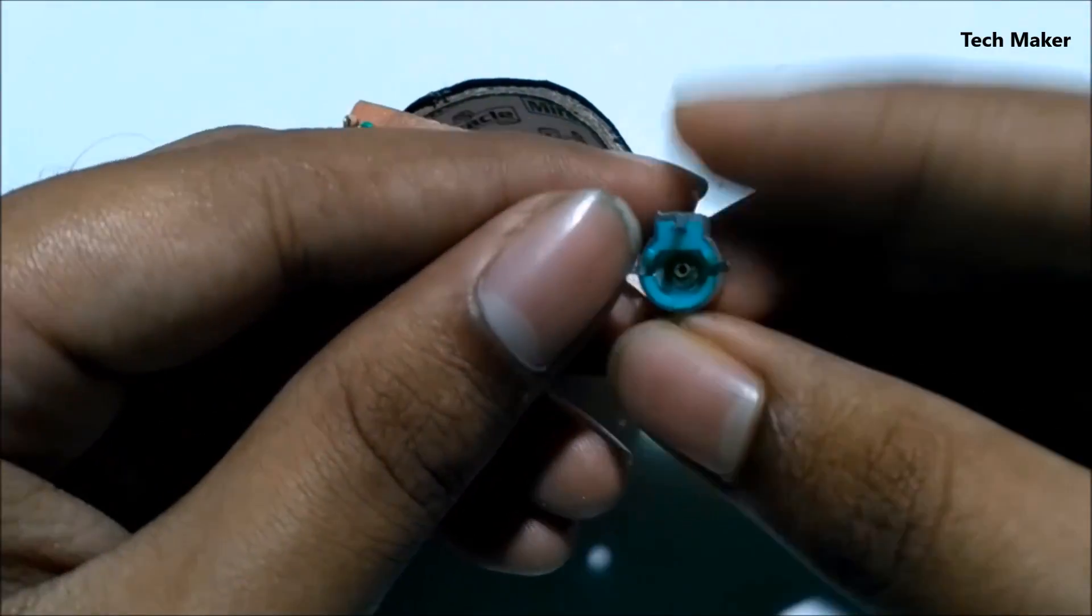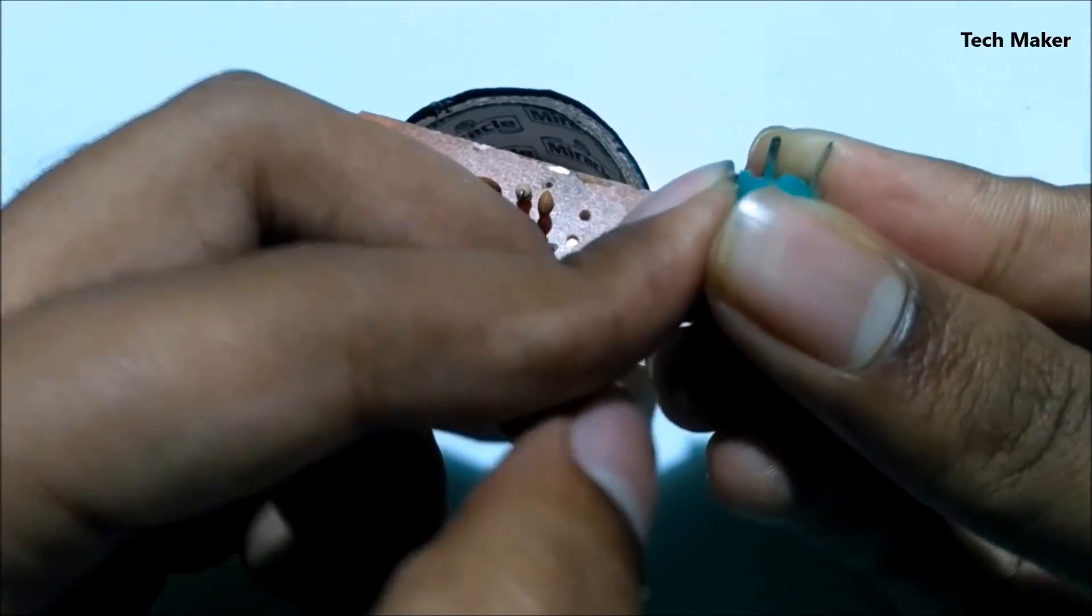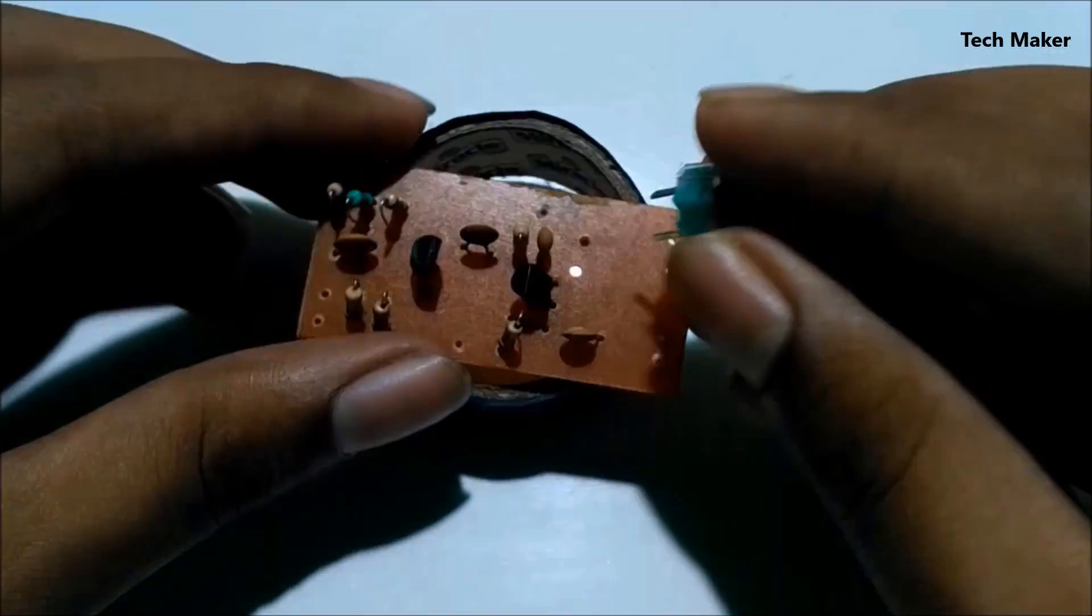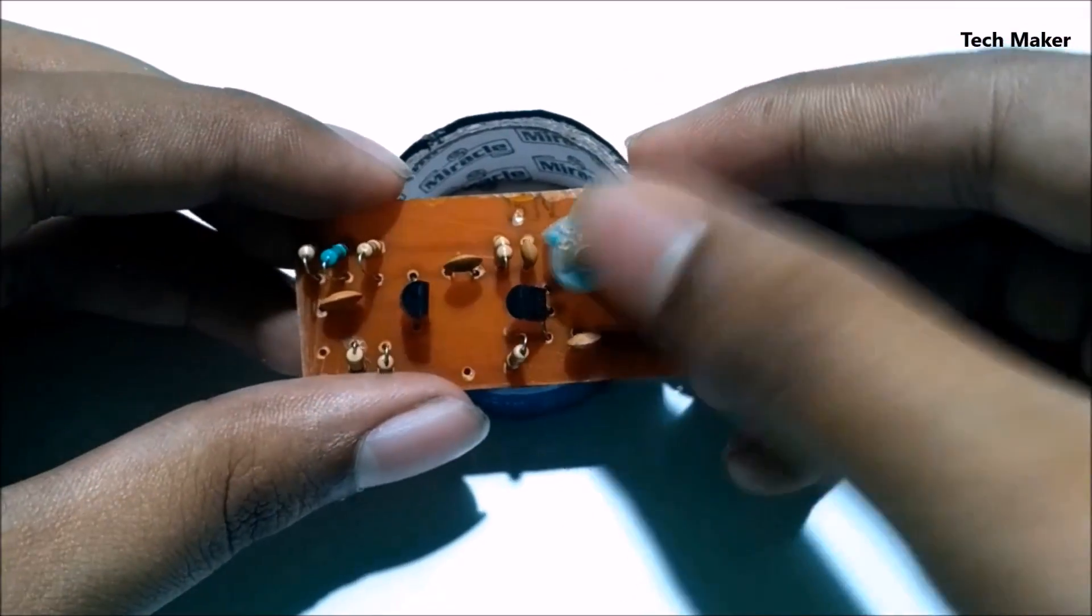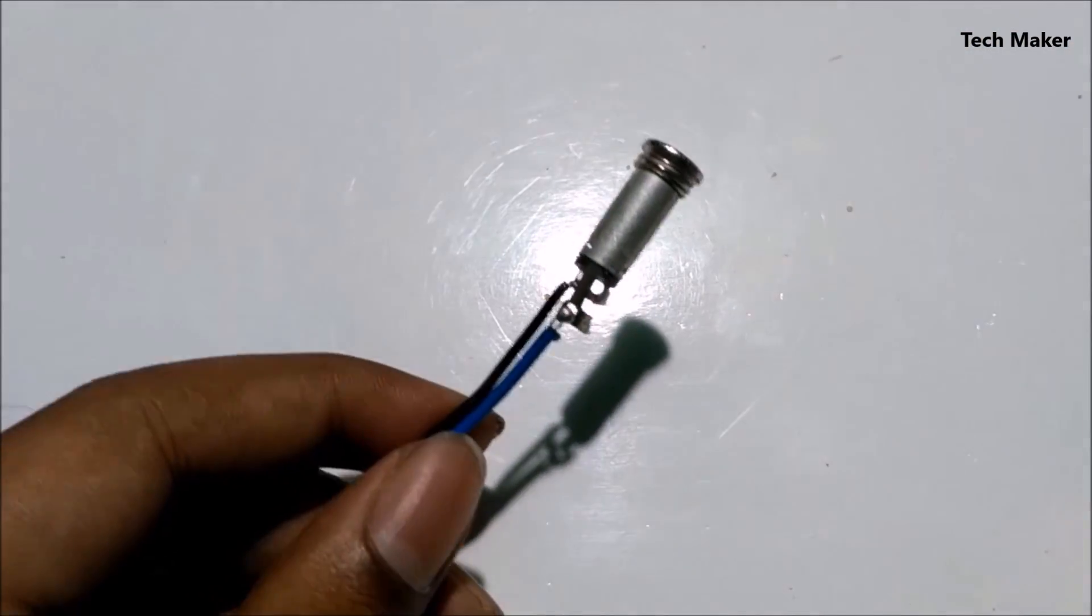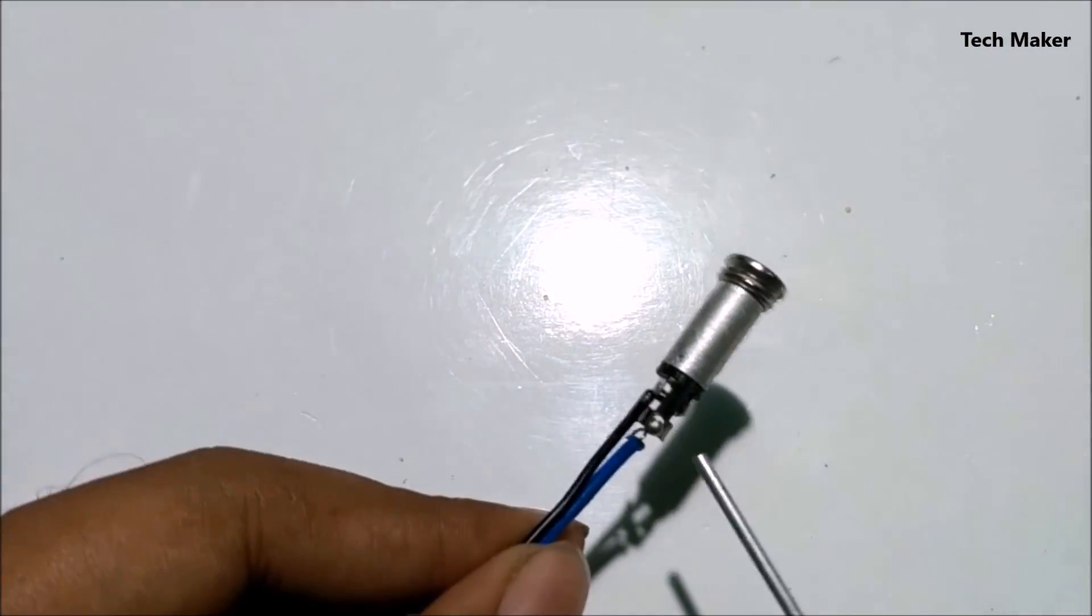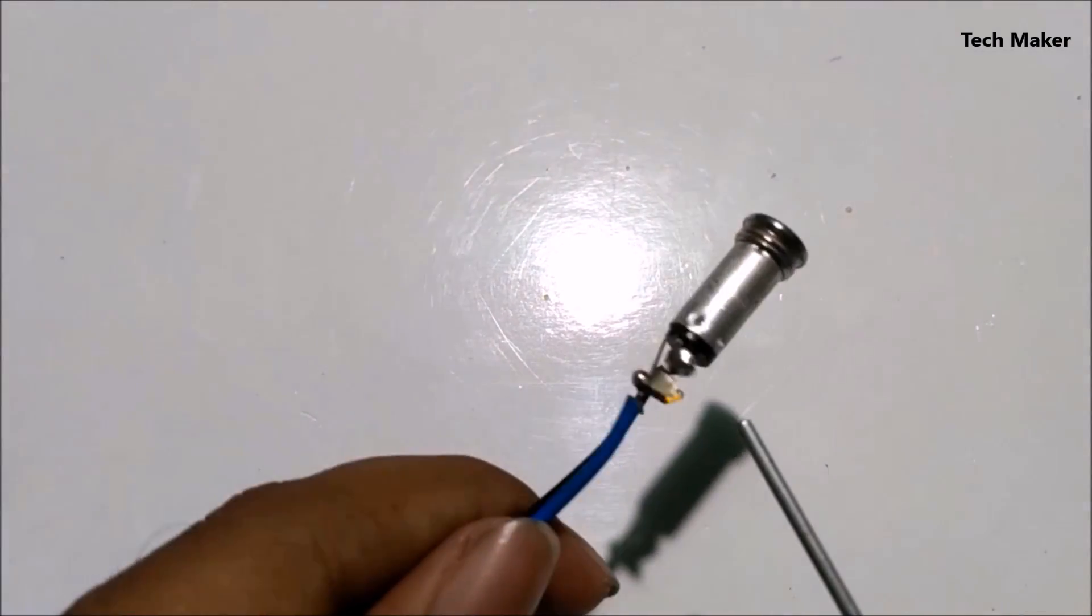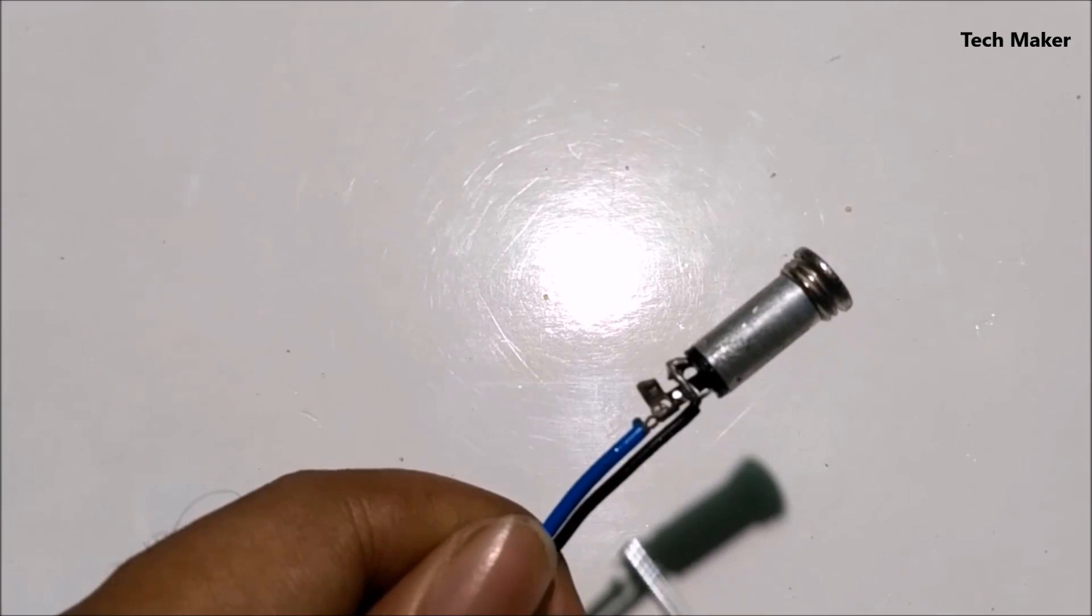Now fold this terminal of the capacitor like this as shown, and reset it on the PCB. This is a 3.5mm audio female jack. This is the ground pin, these are left and right pins, both are shorted together.